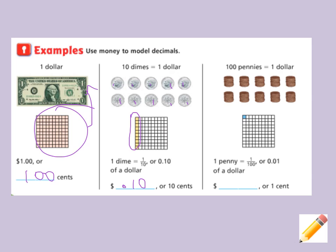Now if I have one hundred pennies, I have one whole dollar. But if I only have one penny, I have one out of a hundred — one hundredth — or point zero one, which is one hundredth of a dollar. So I have zero point zero one, or one cent. It is very important that you do not write point one in this instance, because that would be equivalent to ten cents — it would mean I have one tenth.